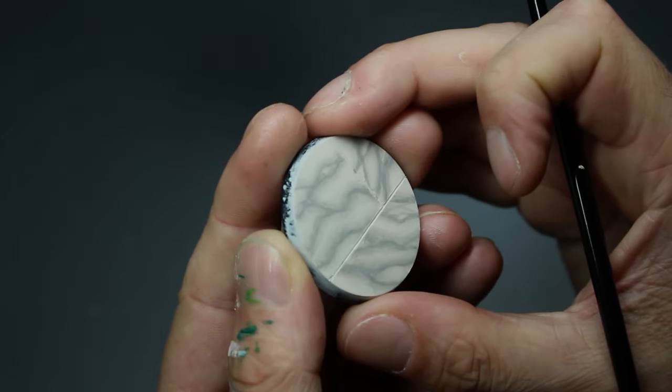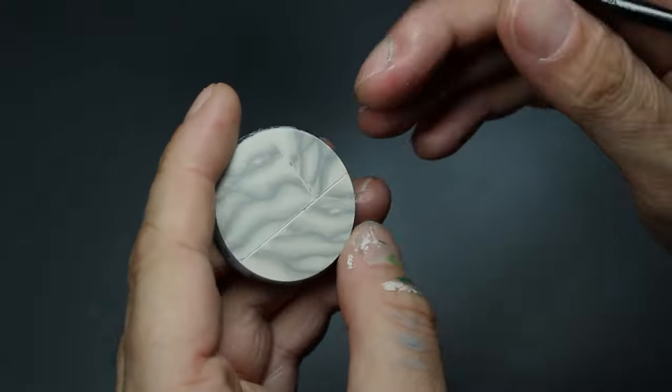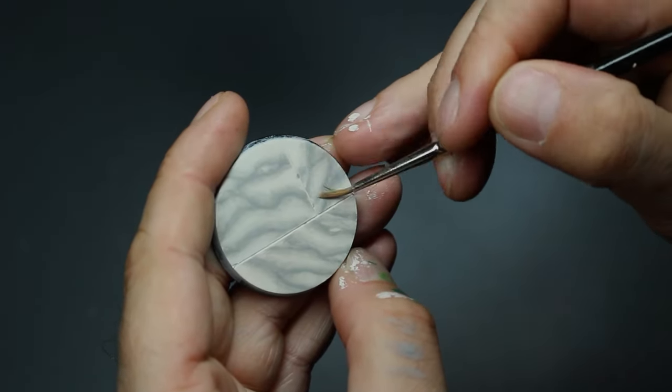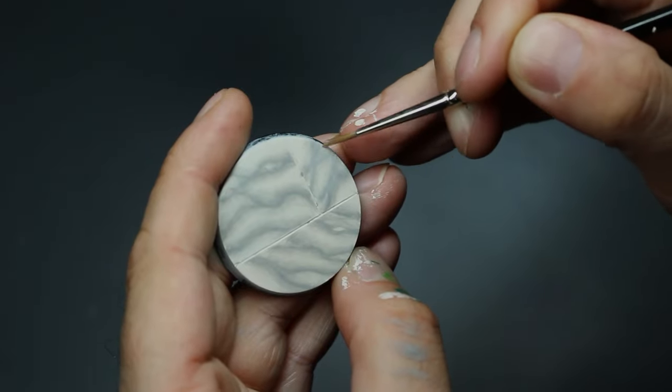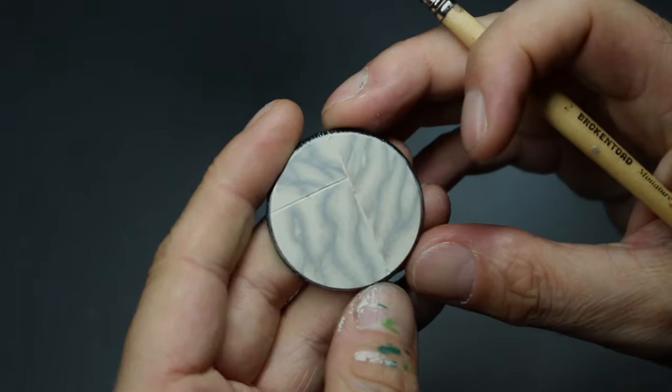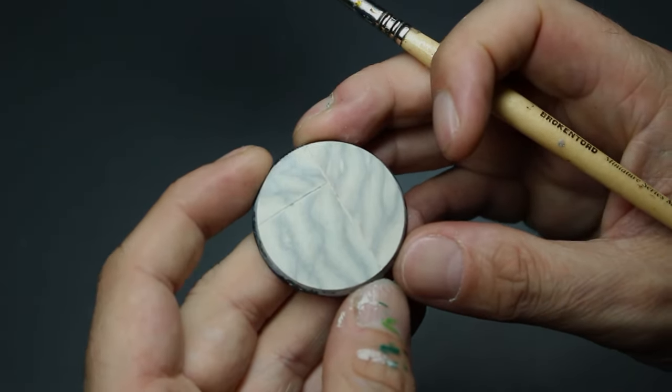Once you've done a few coats, you'll end up with something like this. The secret to marble is to make it look like it's got depth, so we want to glaze over with an incredibly thin layer of Pallid Witch Flesh, just to really soften it again.